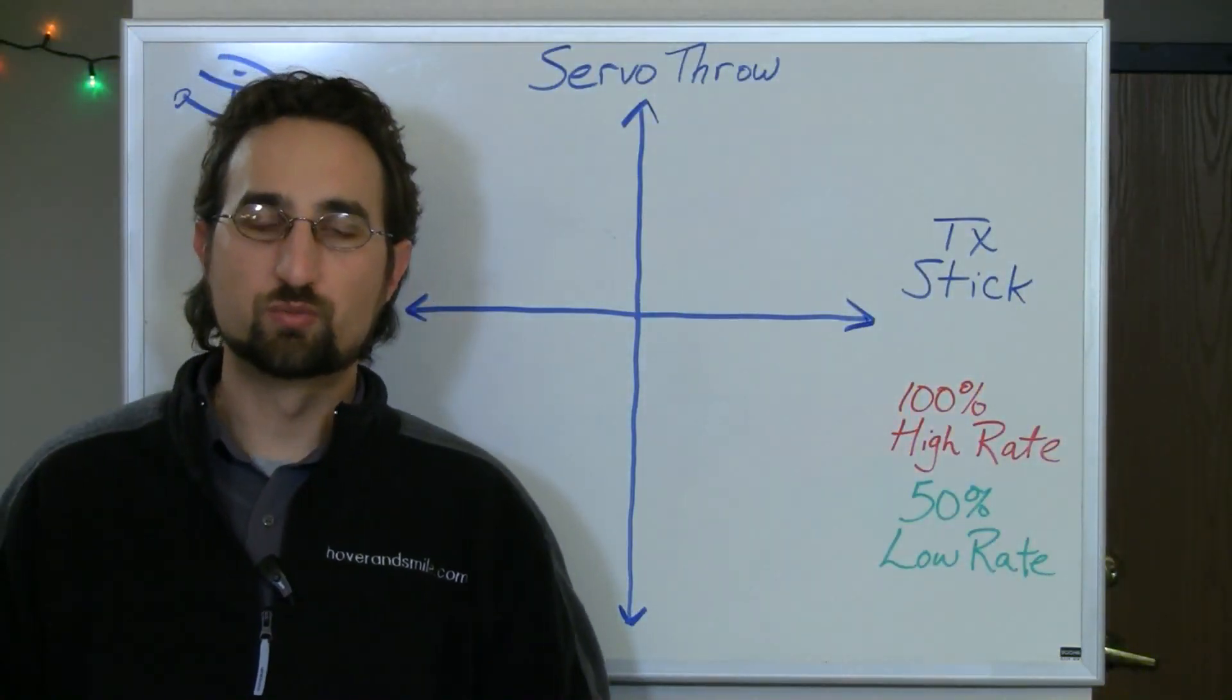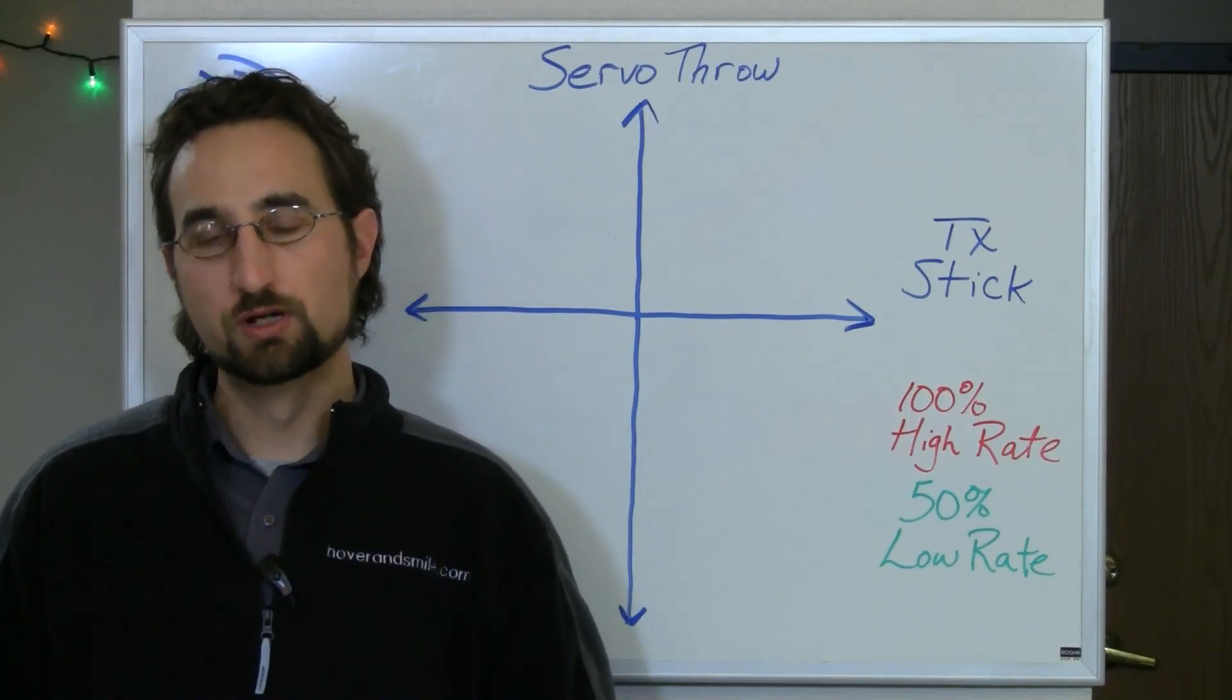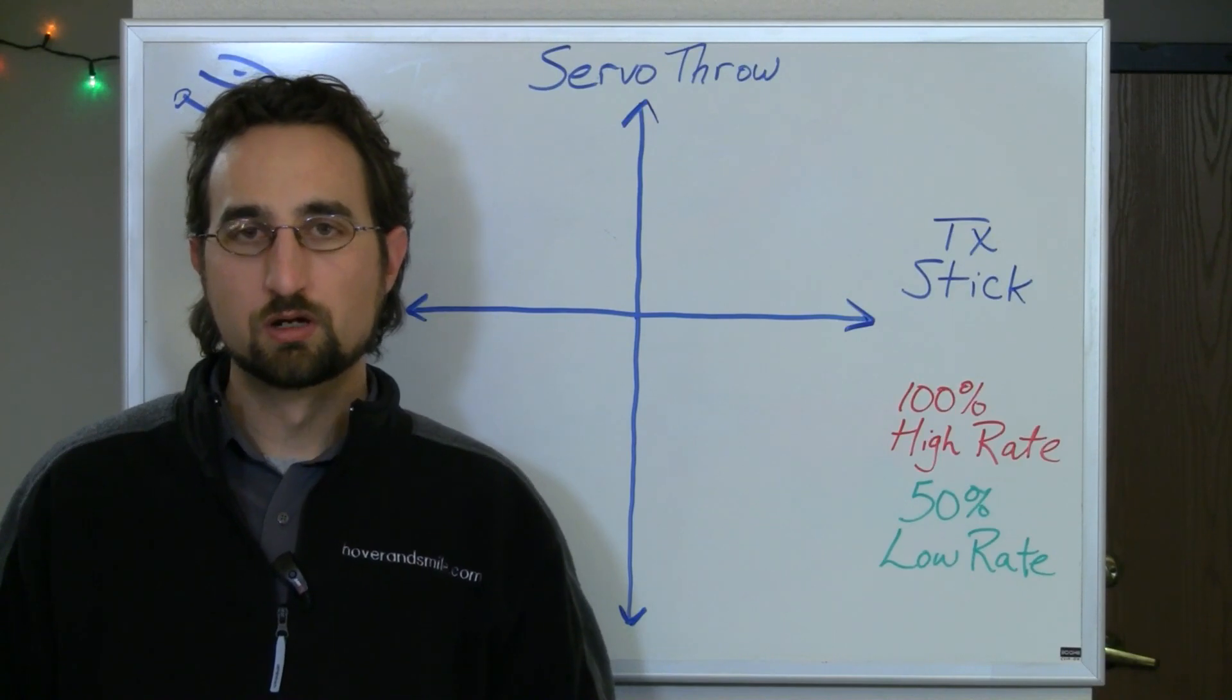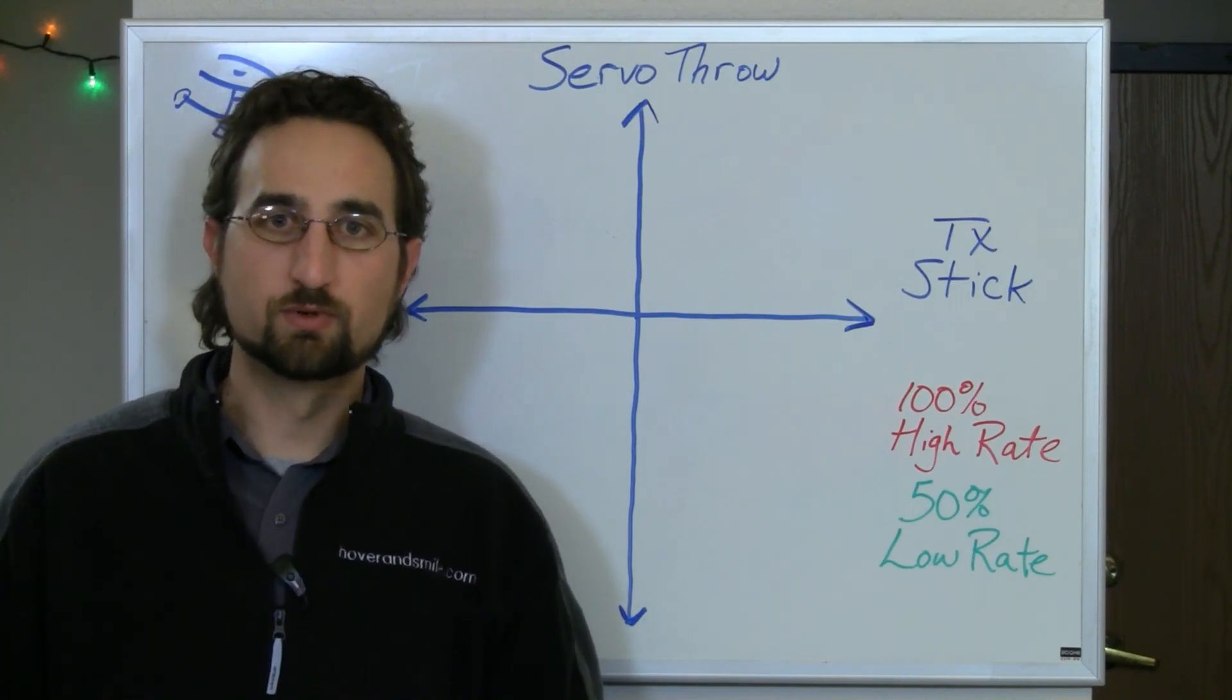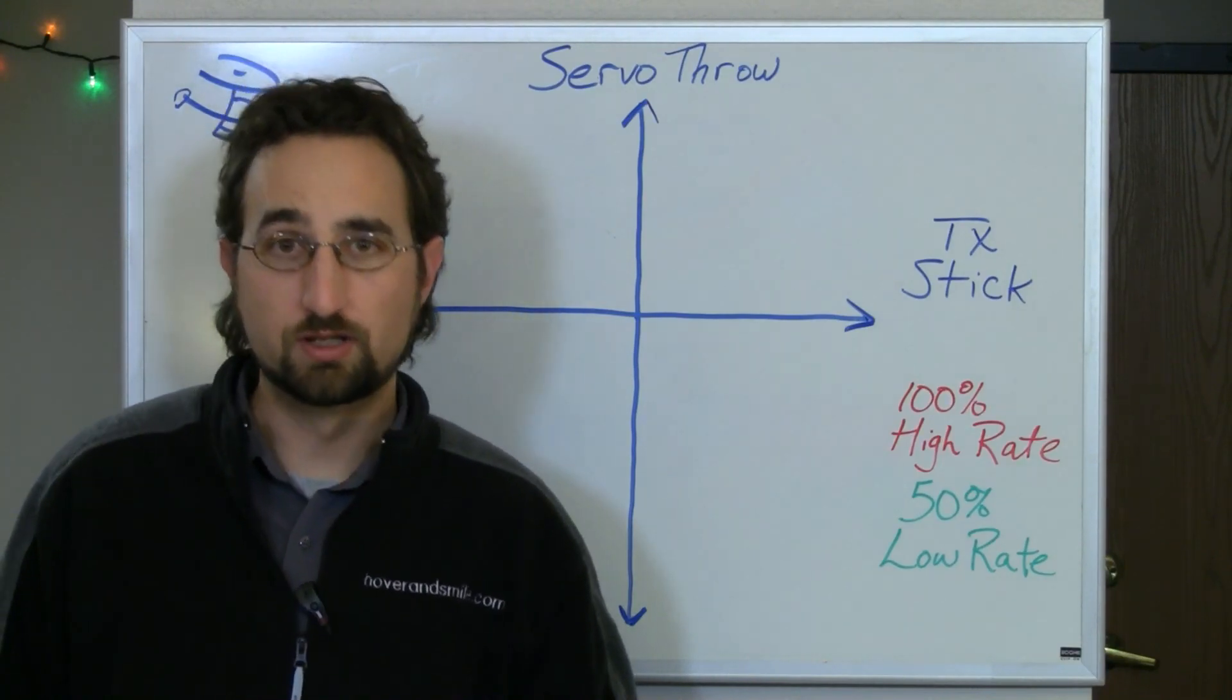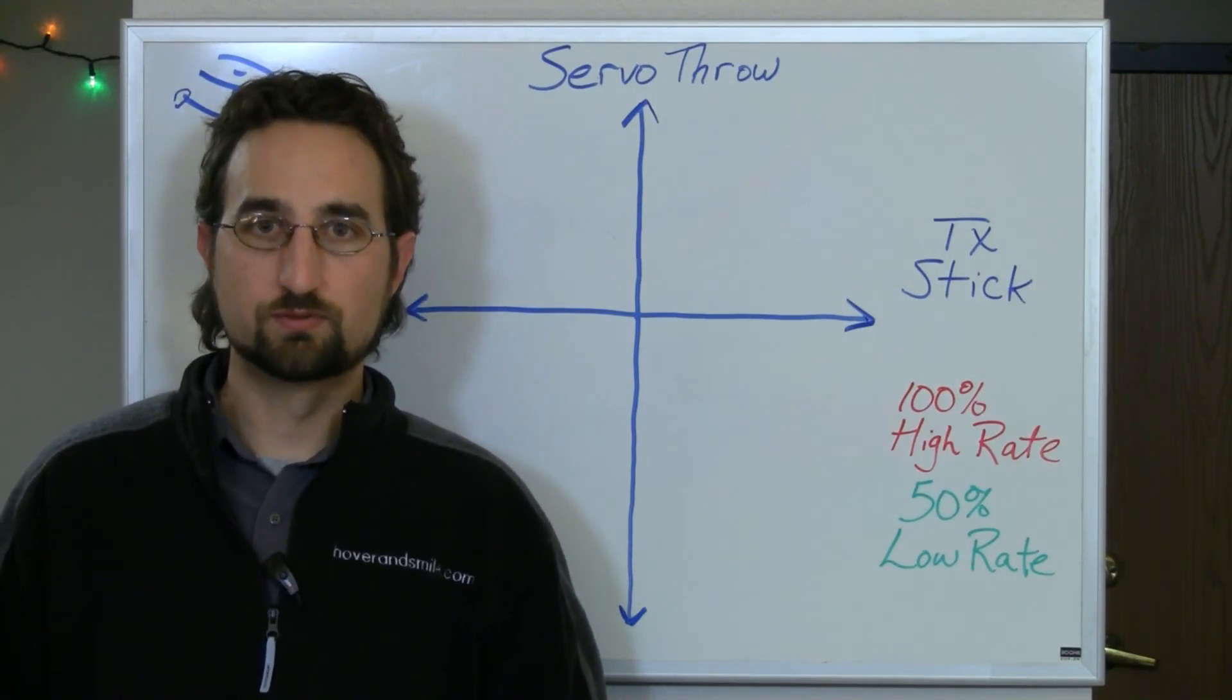Before we dive into dual rates and exponential proper, I want to cover a few terms and concepts to make sure that we're all on the same page. Remember that the servos in your RC airplane or helicopter are used through commands from your transmitter to change control surface angles, change the angle of your swash plates and so on, to change the direction and flight characteristics of your craft.